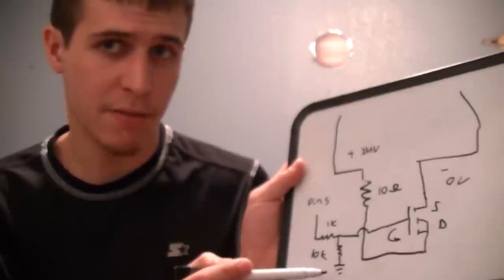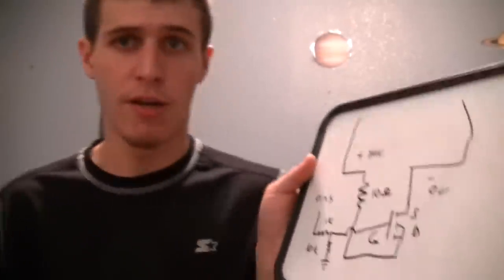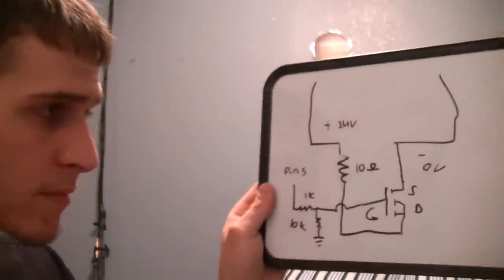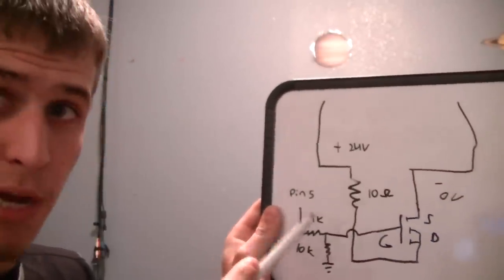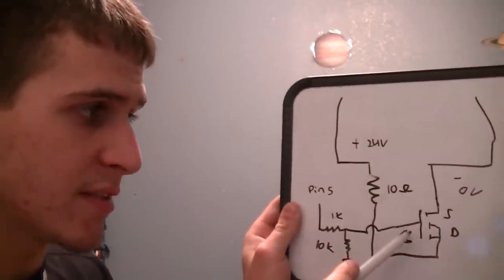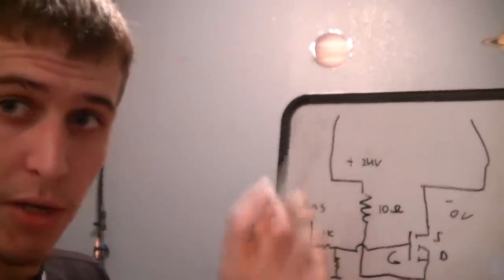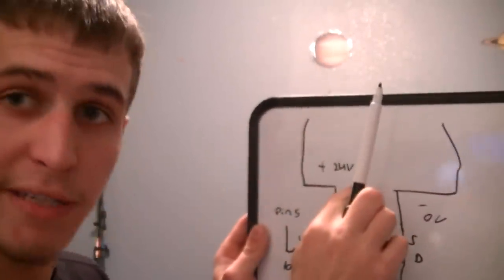And by the way, this ground has to be referenced. It has to be tied to the ground on your Arduino to make this work. So now if we run through this whole thing, when pin five has five volts applied. When you turn pin five on, it's going to drag this gate voltage up.